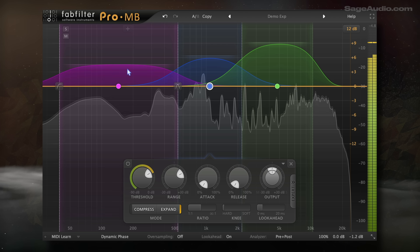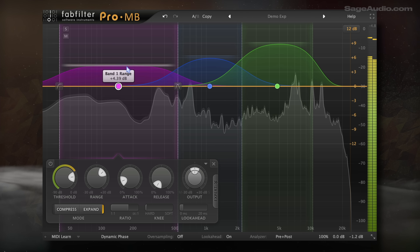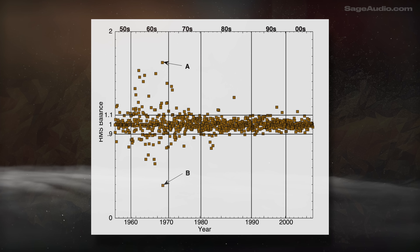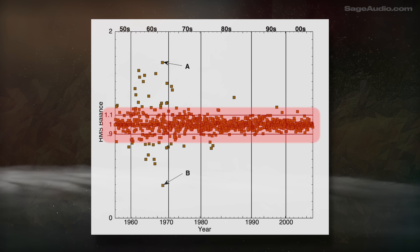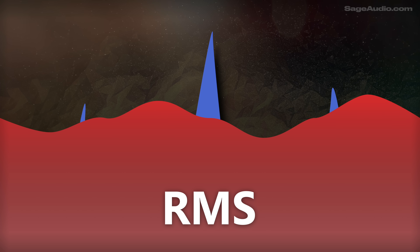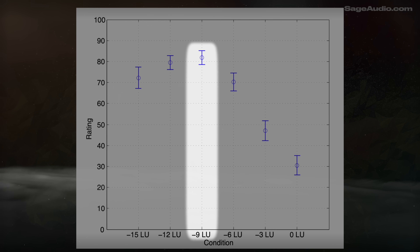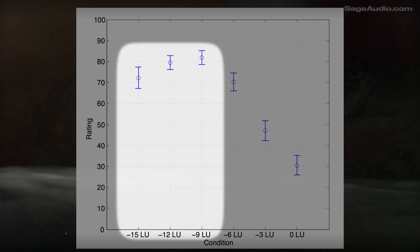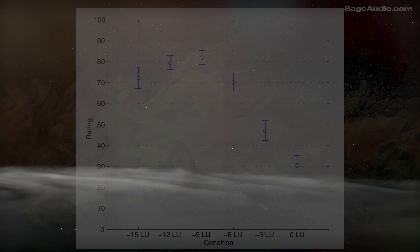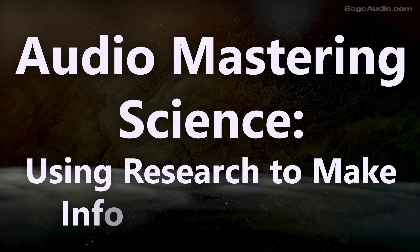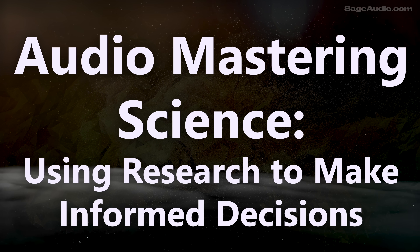In addition to improving my masters through trial and error, I like to review research papers and studies to see if there's anything worth considering during my next session. I've compiled some of the best research that I've found, ranging from psychoacoustic findings to blind studies measuring listener preferences, and even some historical data. So let's jump into audio mastering science, using research to make informed decisions.